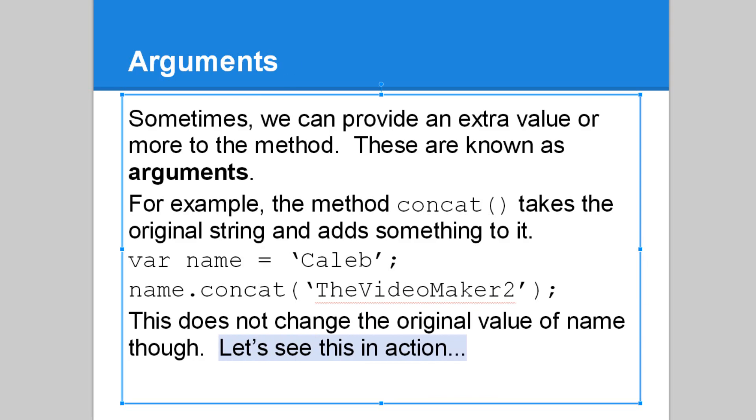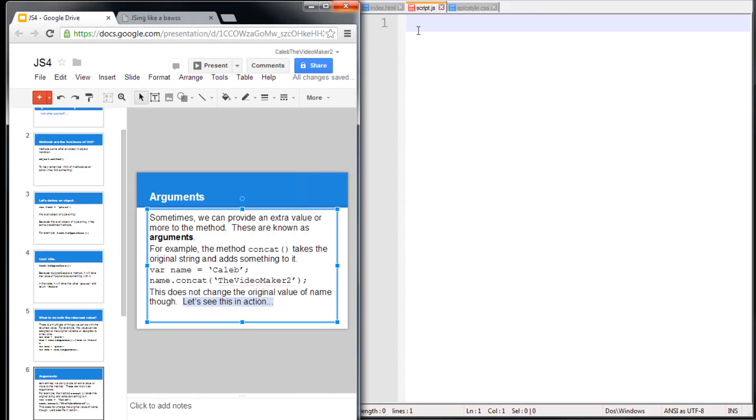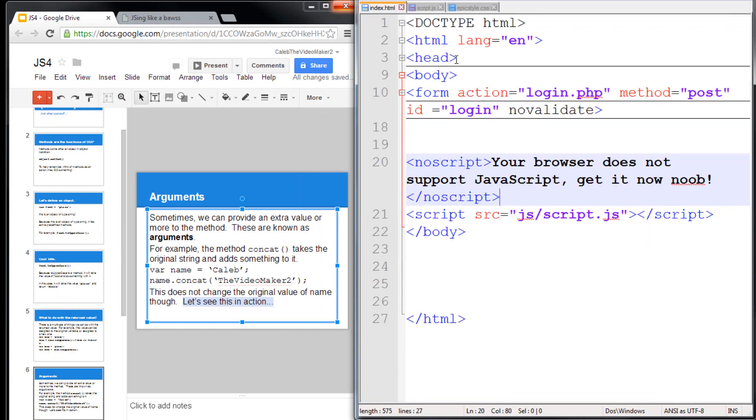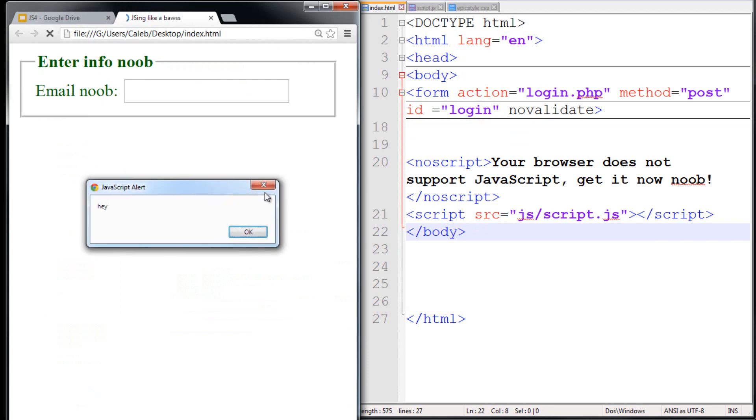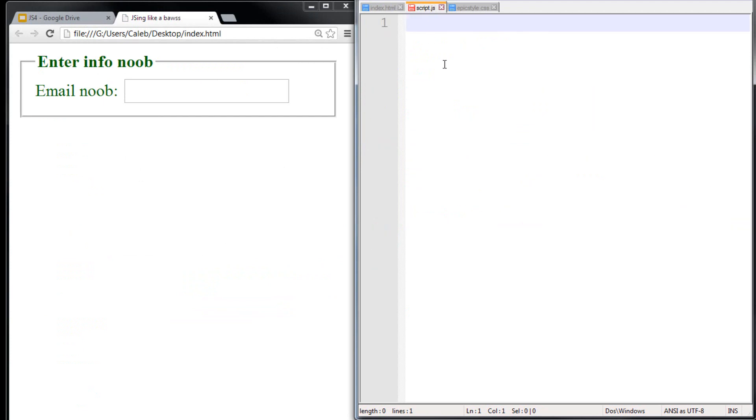So let's see this in action. Let's start programming some JavaScript. So here we have, you can just ignore my extra code. I have some junk in here. But basically, we have a HTML document. We have the head, the body, and then we have a form, but you don't have to worry about that. And then we also have a script tag at the very end of the body, before the body is closed.